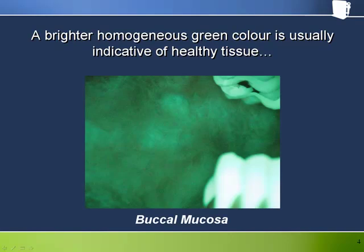Here we see the buccal mucosa with the highly fluorescing teeth on the right of the picture. The buccal mucosa is also typically green but is a high risk site for trauma and consequent inflammation. It is quite typical to see at least some little patches of darkness, as we see in this picture at the back, which shows some mild trauma and inflammation with a resultant dark patch through the Velscope.